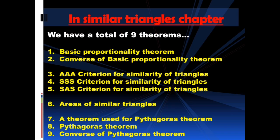In this chapter we have a total of nine theorems. Theorem 1: Basic Proportionality Theorem. Theorem 2: Converse of Basic Proportionality Theorem — based on these theorems we do exercise 8.1. Theorem 3: AA criteria for similarity of triangles. Theorem 4: SSS criteria for similarity of triangles. Theorem 5: SAS criteria for similarity of triangles — based on these theorems we do exercise 8.2. Theorem 6: Areas of Similar Triangles — based on this theorem we do exercise 8.3. Theorem 7: a theorem used for the Pythagoras theorem. Theorem 8: Pythagoras Theorem. Theorem 9: Converse of Pythagoras Theorem — based on these theorems we do exercise 8.4.